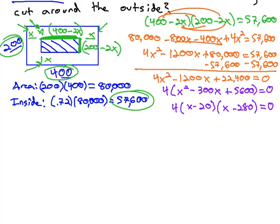And again, if you can't find those factors, you could use the quadratic formula or completing the square instead. We'll set x minus 20 equal to zero, x minus 280 equals zero.